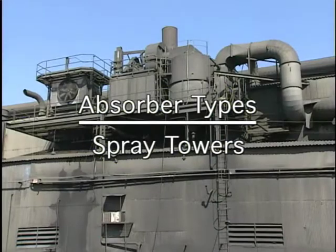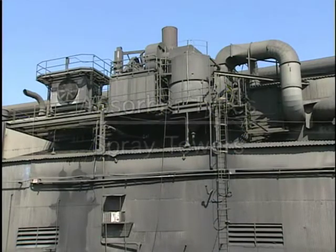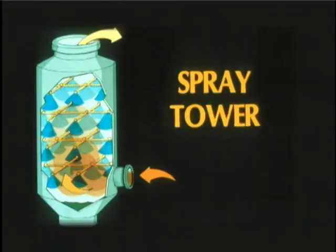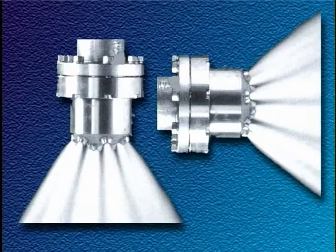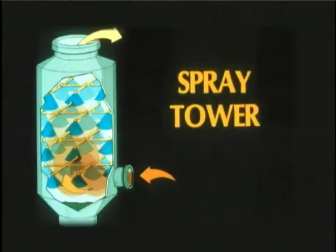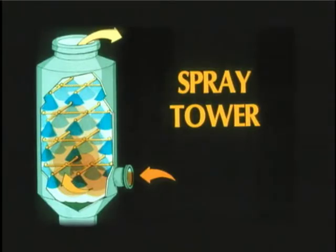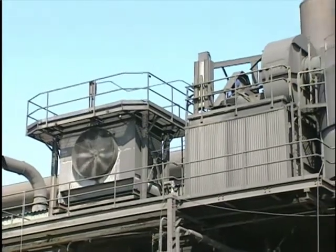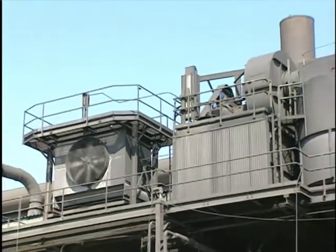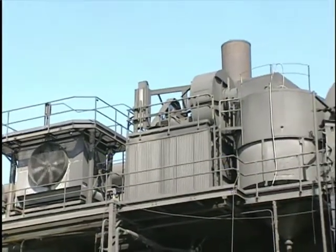The spray tower is the simplest device to use for gas absorption. It consists of an open vessel with one or more sets of spray nozzles to distribute the scrubbing liquid. Typically, the gas stream enters at the bottom and passes upward through the sprays. This is referred to as counter-current operation.